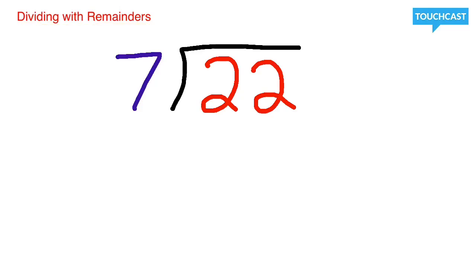To use this process, we have to look at the equation we have here. The first equation we have is 22 divided by 7.